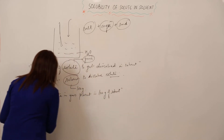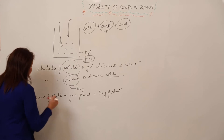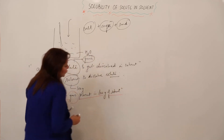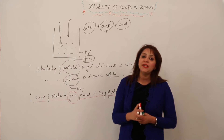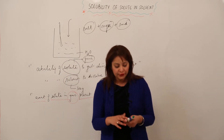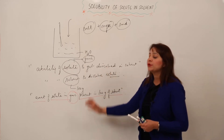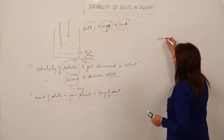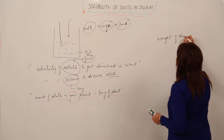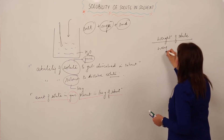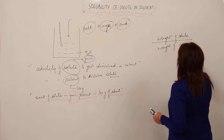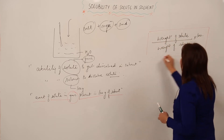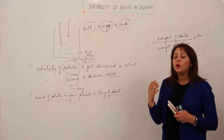Solubility refers to the amount of solute in grams present in 100 grams of solvent. This indicates the solubility of any solute in a given solvent. The mathematical relation used is: solubility = (weight of solute ÷ weight of solvent) × 100, giving us the percentage solubility — how much weight of solute is actually getting dissolved in 100 grams of the solvent.